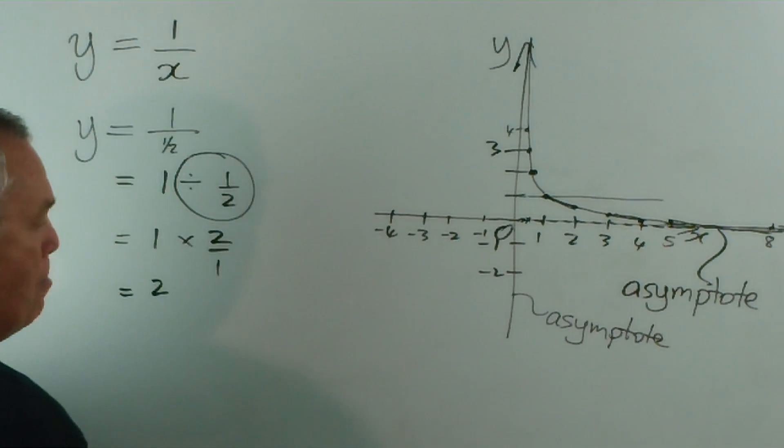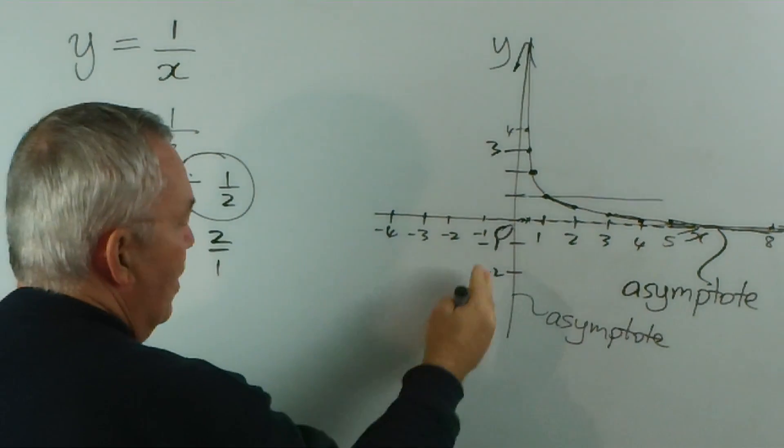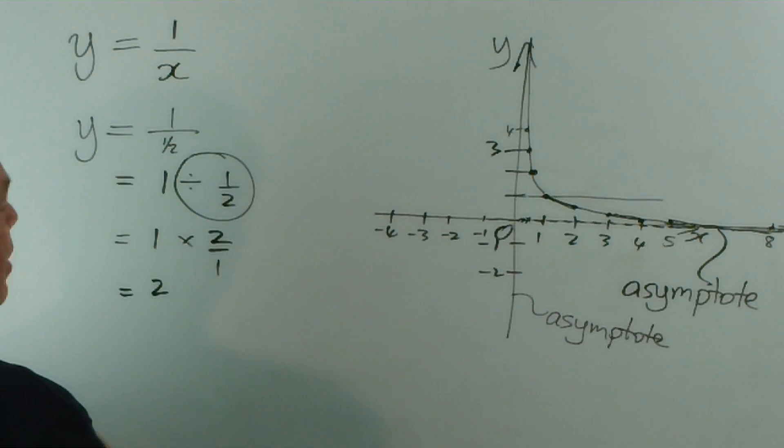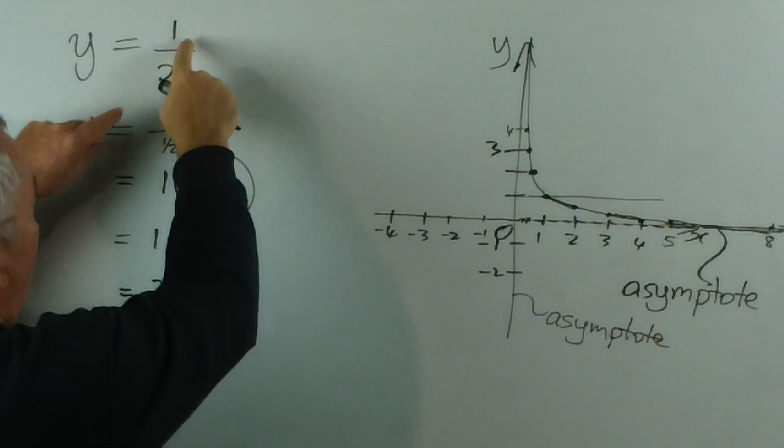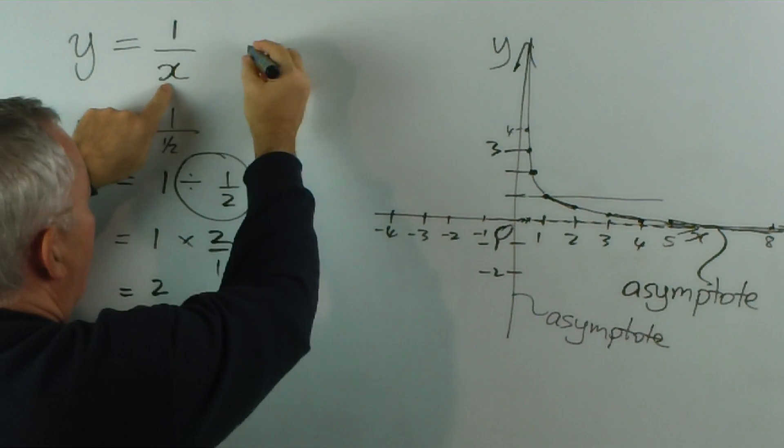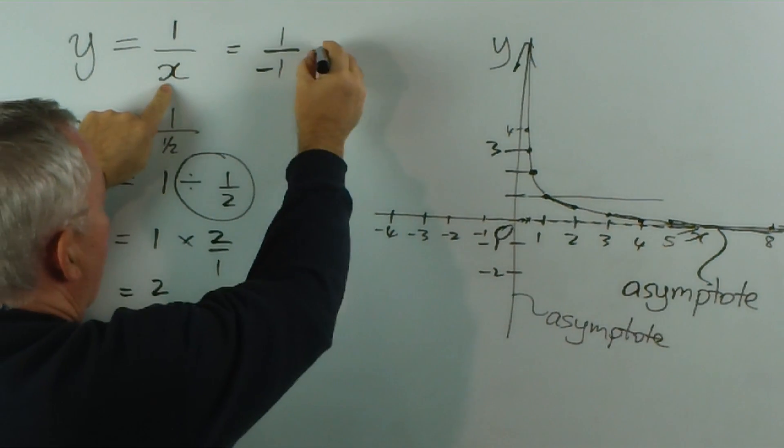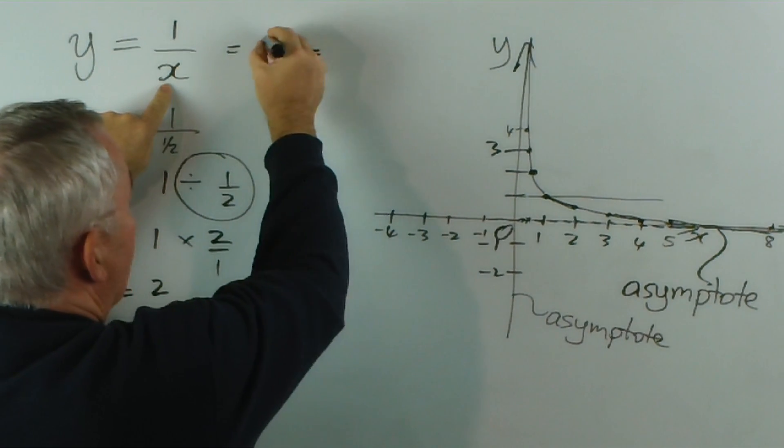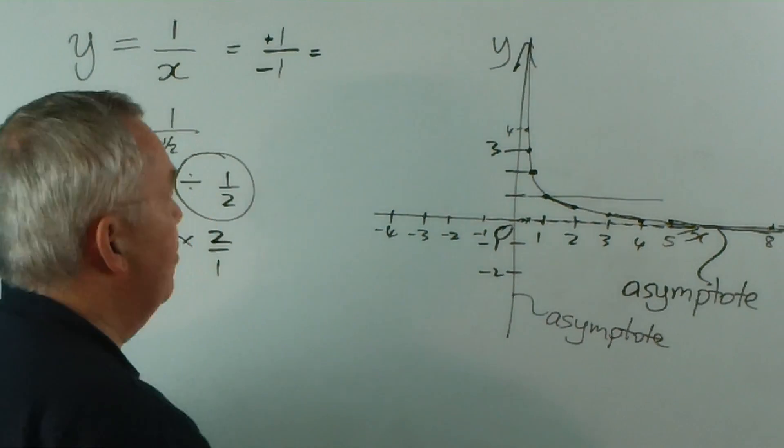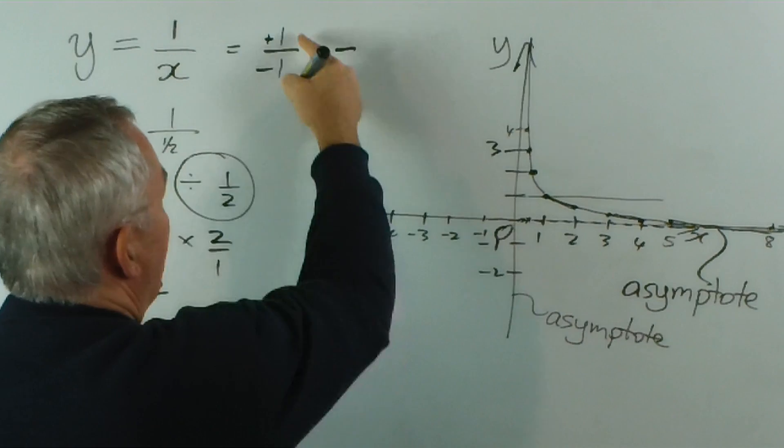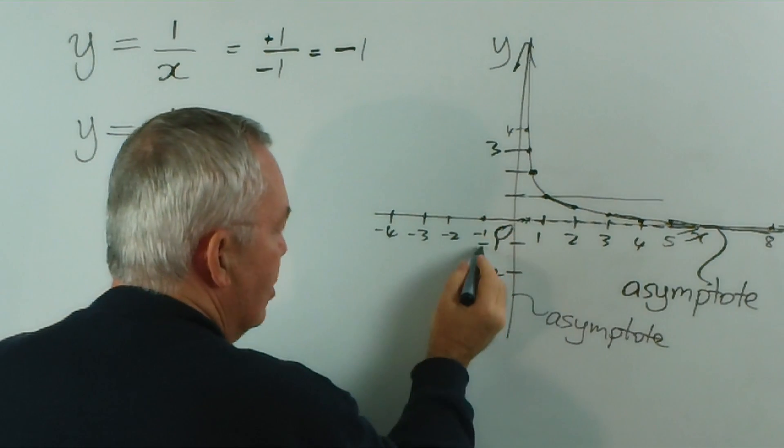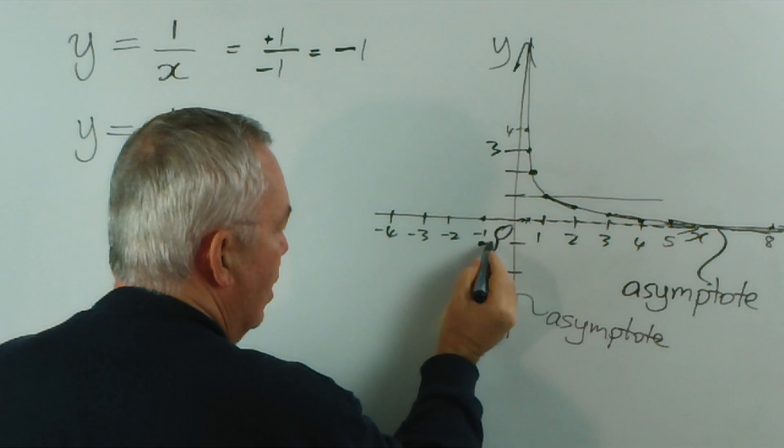Now we're not quite finished. We've substituted positive values, but what happens if we substitute negative values? Well, if I substitute negative 1, I get 1 divided by negative 1. Which is just, it's a positive 1 divided by a negative. And you should know that when you divide a positive by a negative, you get a negative answer. And 1 over 1 is 1. So when x is minus 1, the y-value would be minus 1.